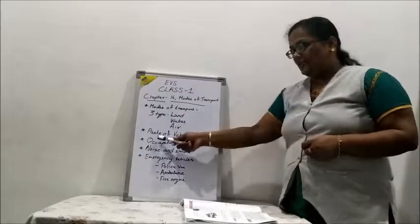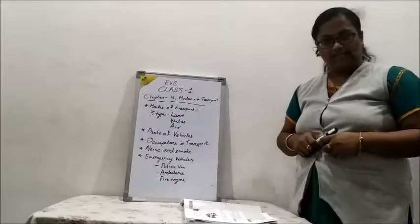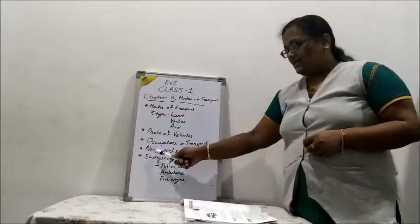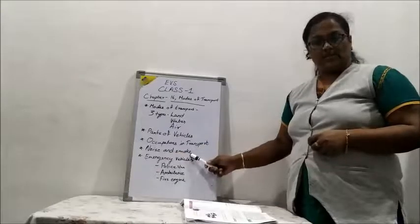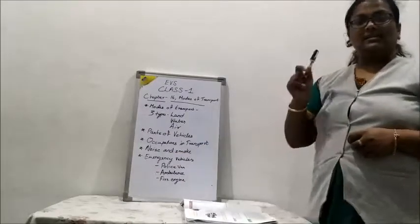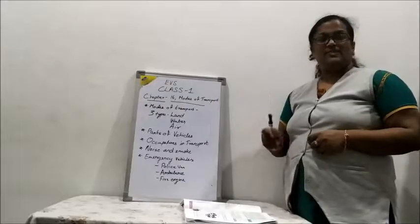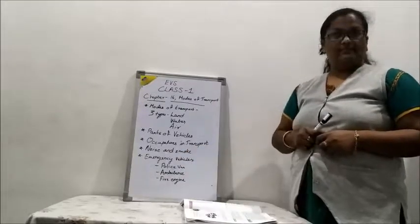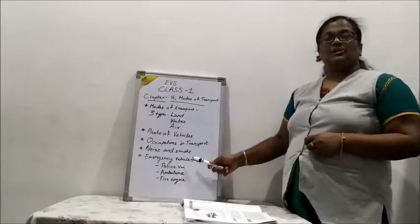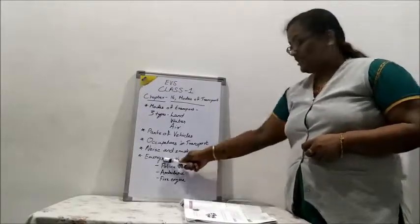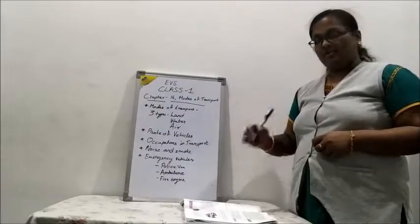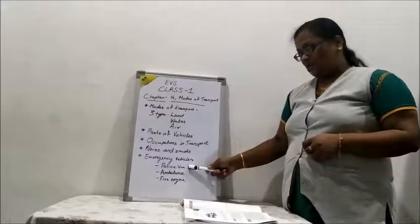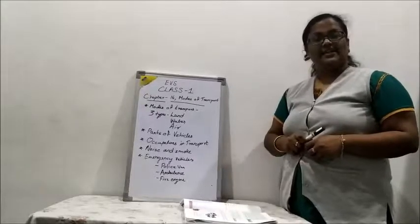We are going to learn about parts of vehicles, occupations in transport, and noise and smoke. As you know, vehicles are very useful for us, but they produce noise and smoke. After that, we are going to learn about emergency vehicles. There are 3 types of emergency vehicles: police van, ambulance, and fire engine.